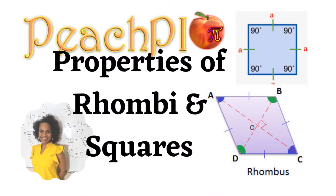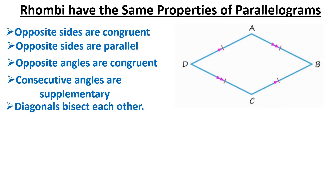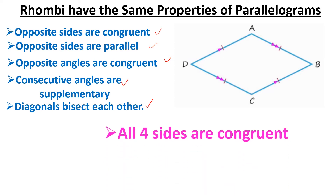Let's take a look at properties of rhombuses and squares. First, we're going to look at rhombuses. Rhombuses have the same properties as parallelograms: opposite sides are congruent, opposite sides are parallel, opposite angles are congruent, consecutive angles are supplementary, and diagonals bisect each other. A rhombus is also a parallelogram but in addition, all four sides are congruent.